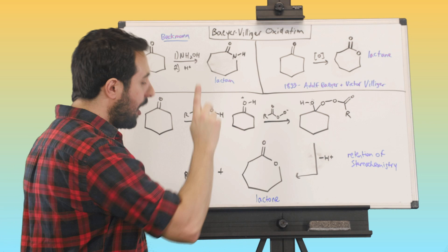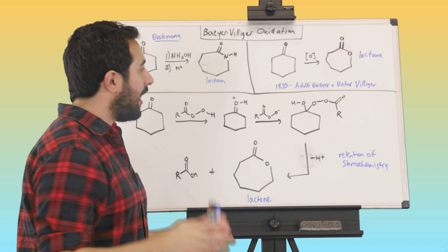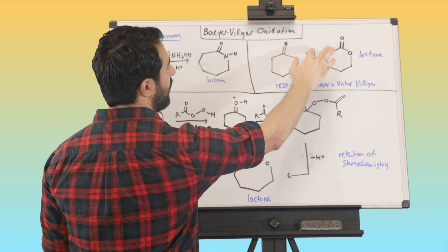So Bayer-Villiger oxidation is actually very similar. We're just inserting an oxygen atom instead. So this was 1899, two fellas, Adolph Bayer and Victor Villiger. So again, some pretty old chemistry here, but it's very similar. We know that by doing Bayer-Villiger oxidation, this is just a generic symbol for oxidation. We'll look at the mechanism in a moment.